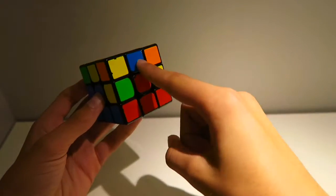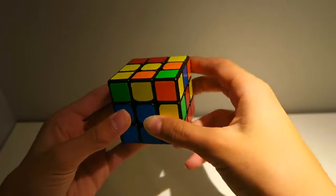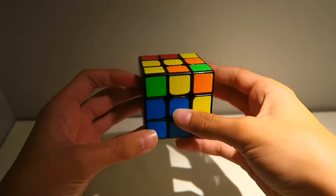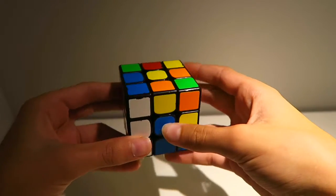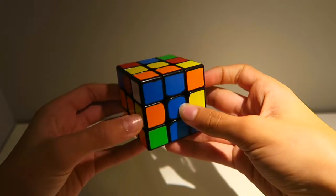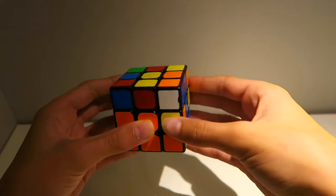Now we need to look for another edge. Here's one - orange and blue. Here are the orange and blue centers. Let's line it up with the front sticker, which is blue. Again, we move to the side, bring up the slot, move the edge back, bring the slot down, and we've again got the corner and the edge.